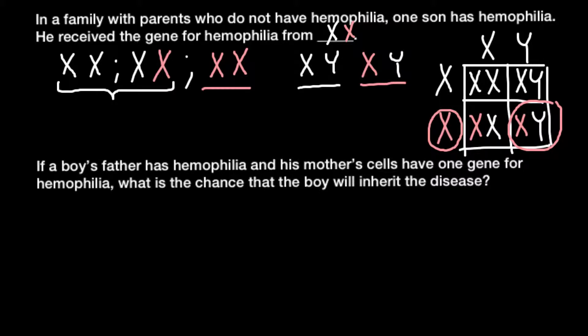Next question: if a boy's father has hemophilia and his mother's cells have one gene for hemophilia, what is the chance that the boy will inherit the disease? The father's genotype would be the affected one — one defective X and one Y — and the mother would be heterozygous, a carrier but unaffected. So we are crossing these two genotypes.